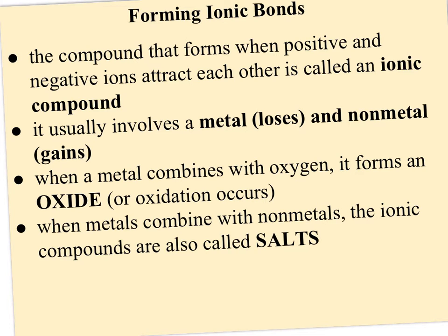The compound that forms is known as an ionic compound. It always contains at least one positive and one negative ion. It usually involves a metal losing electrons and a nonmetal gaining electrons. When it involves oxygen, it's called an oxide, or we say oxidation has occurred. When it combines with other nonmetals, they're referred to as salts. When you hear of ionic compounds or salts, we're talking about the same thing. In fact, when you dissolve salts in water and you hear about electrolytes, those are also these ionic compounds.